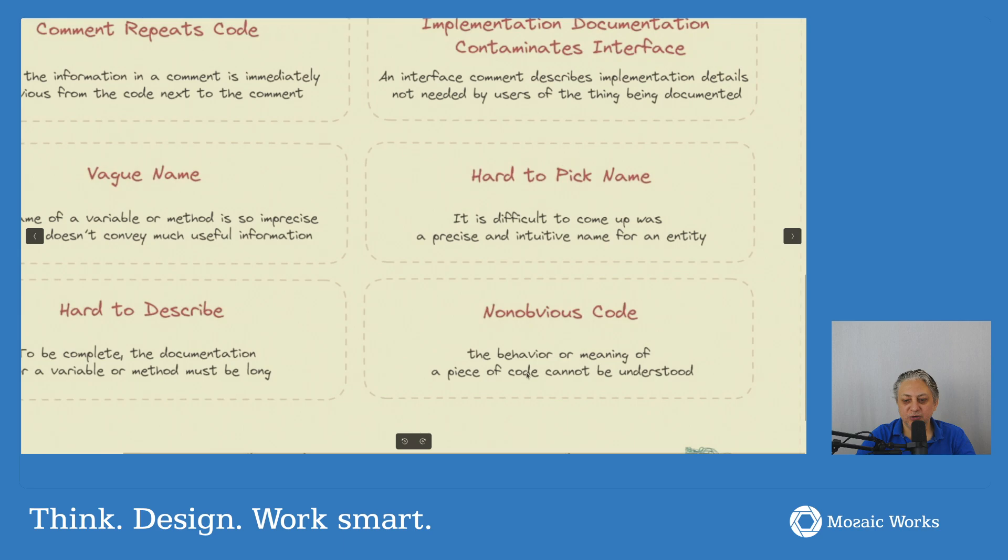And the last one is non-obvious code. The behavior or meaning of a piece of code cannot be understood. I've seen this quite a lot. This is code that is either written in a very convoluted manner or code that is packed into basically doing too many things in one method.